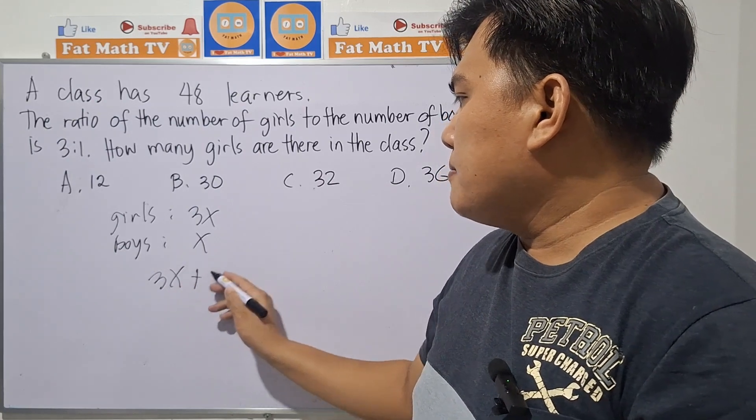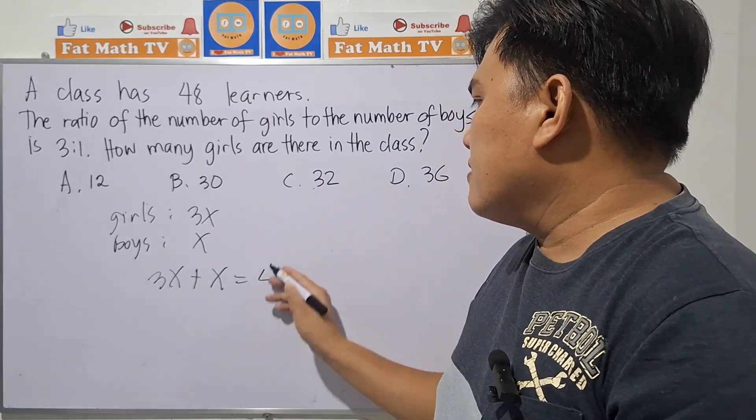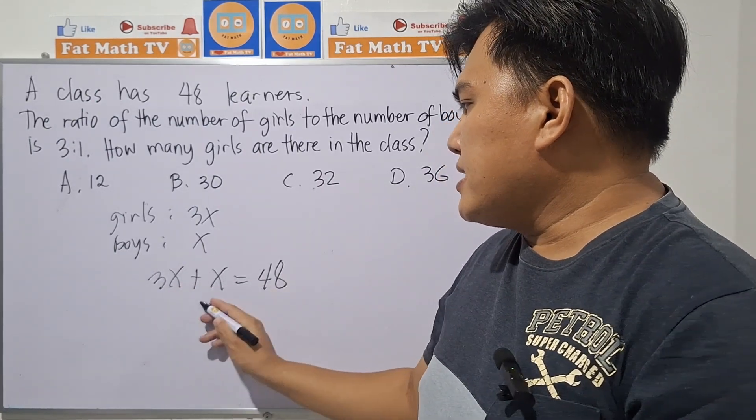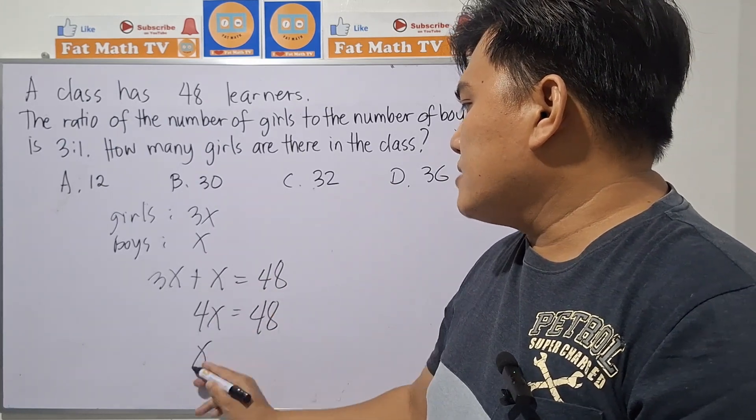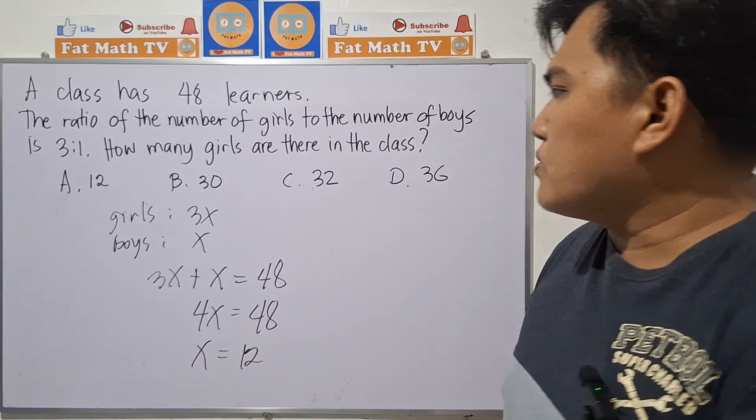3x plus x is 4x, and divide both sides by 4. X is 12.